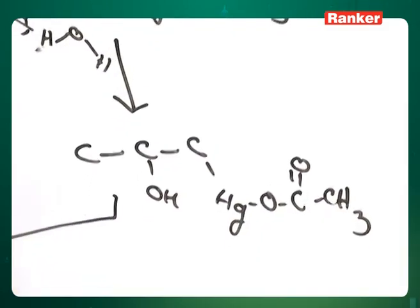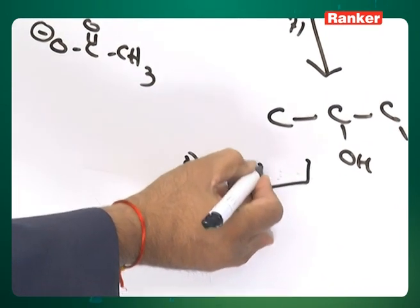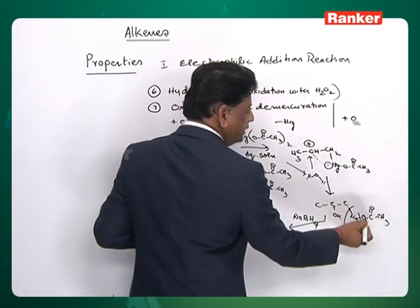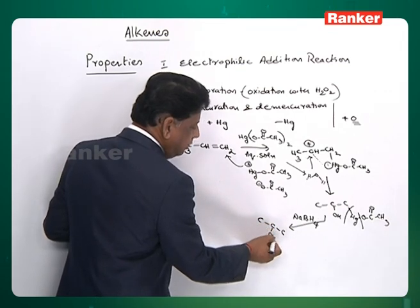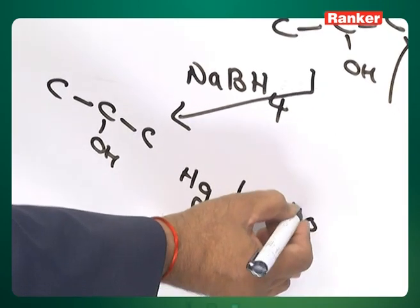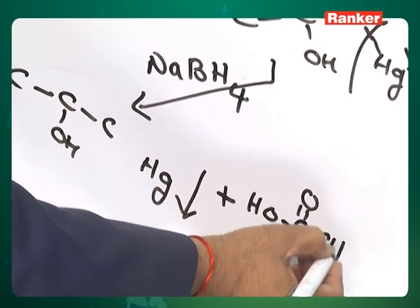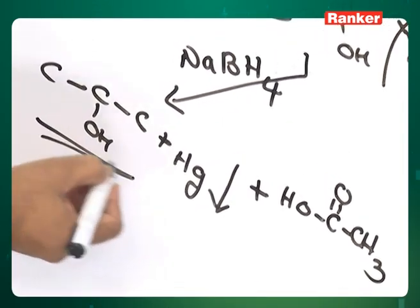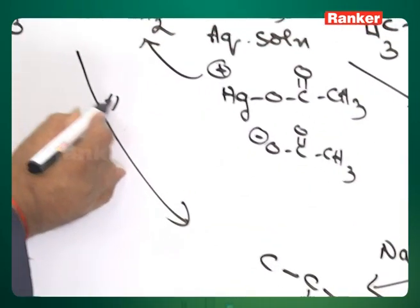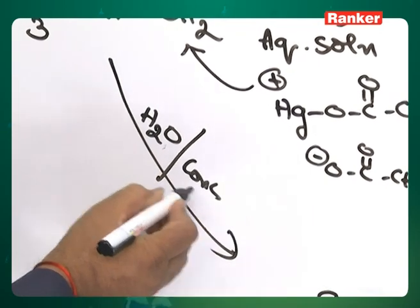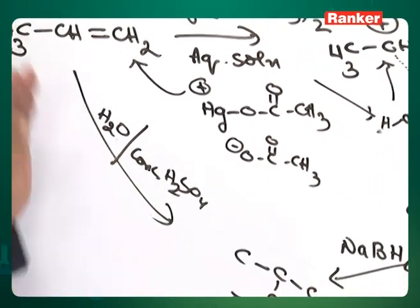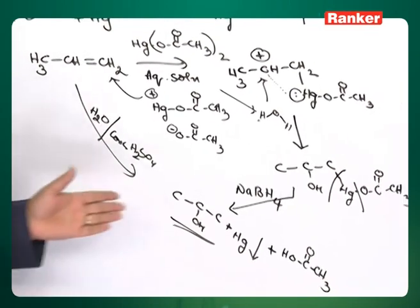The second step is demercuration. Sodium borohydride (a reducing agent) is used to reduce and remove the mercury bonds, giving H in its place. The result is: mercury is released as elemental mercury, acetic acid (CH₃COOH) is formed as a byproduct, and the main product is 2-propanol. The same product (2-propanol) is obtained from adding water with sulfuric acid — so what is the special significance of oxymercuration-demercuration?